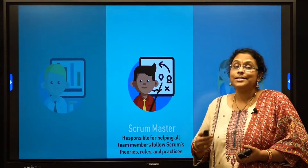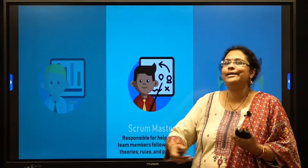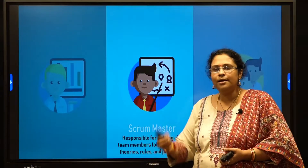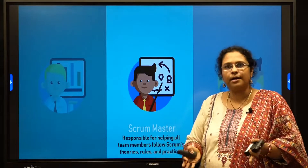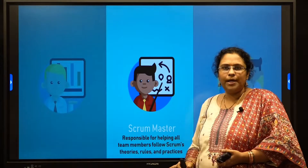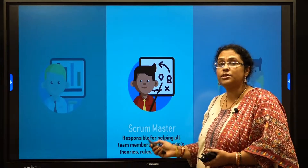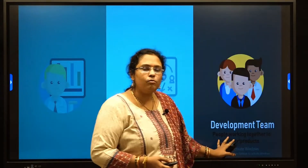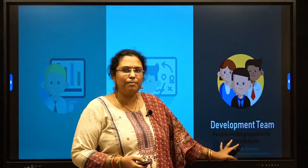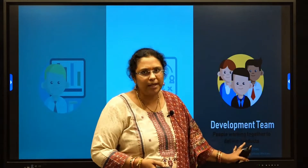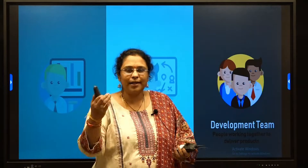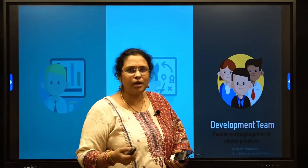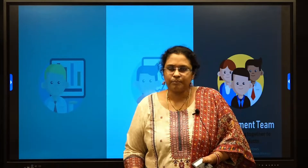The second person is the Scrum Master. The Scrum Master interacts with the people who are developing the product. His duty is to make sure that the requirements in the current sprint are executed properly, and if the team is facing any issues, he is responsible to rectify those issues. The next person involved is the Development Team, also called the Scrum Team. These are the people who actually develop the requirements within the given sprint time of 14 days, delivering a working product to the customer.